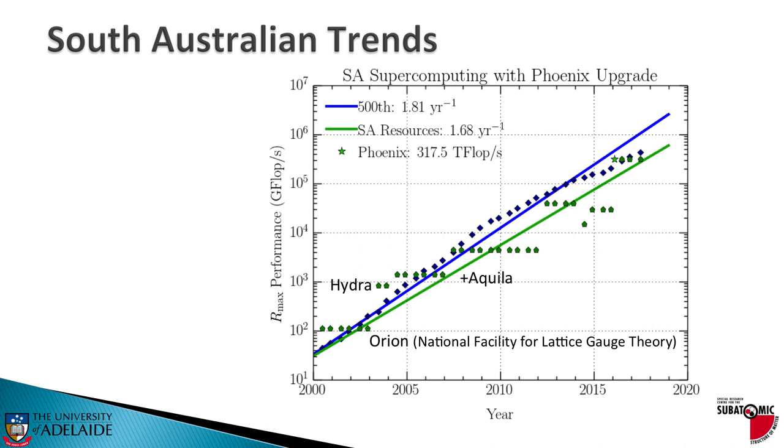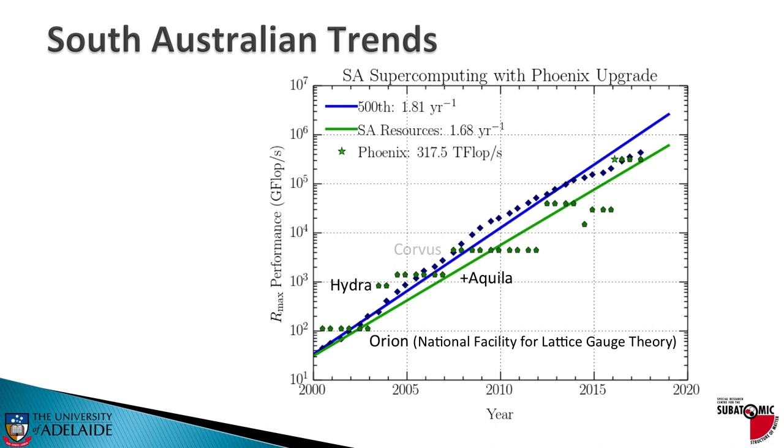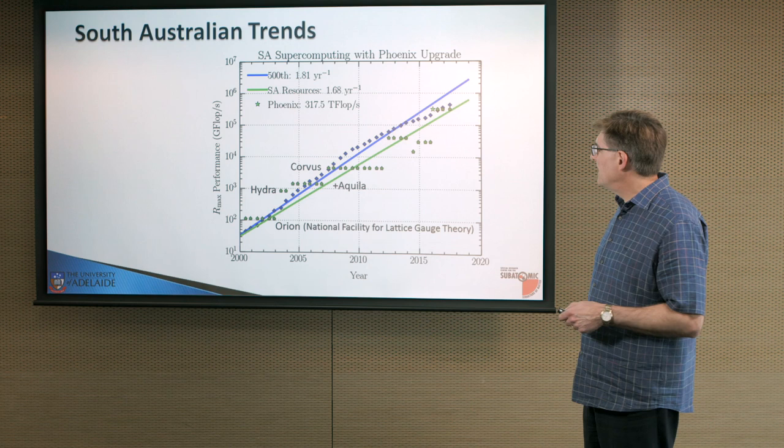And then you can see we ran into the same problem, that these computers were left running for too long. They weren't upgraded. You fall out of the top 500. Corvus came along and just squeaked over the line, but then survived way too long. Eventually, Tizard got close to the top 500, but there wasn't enough investment to get us back to where we needed to be.